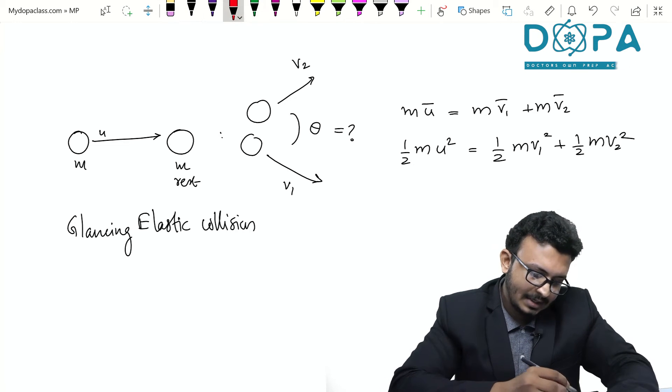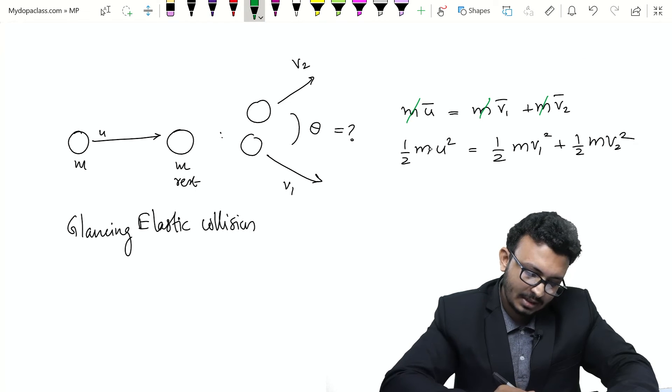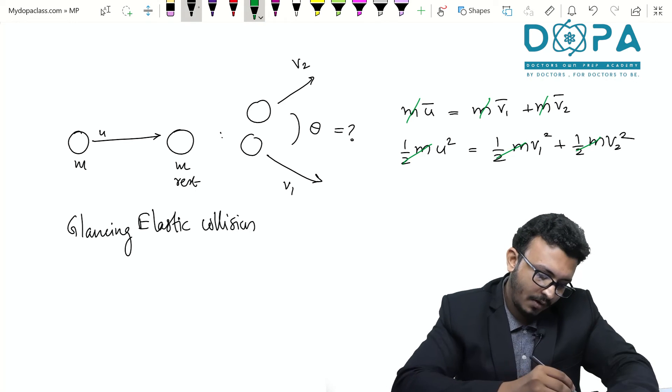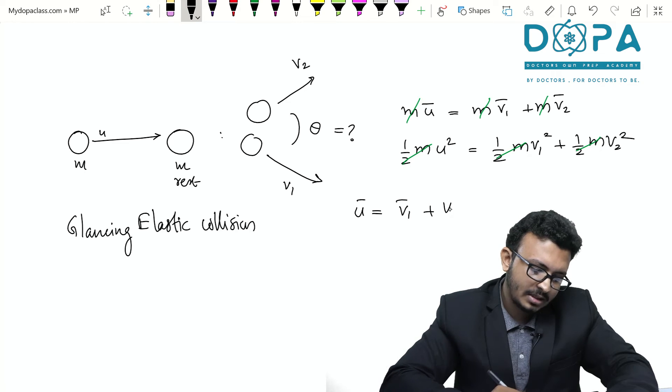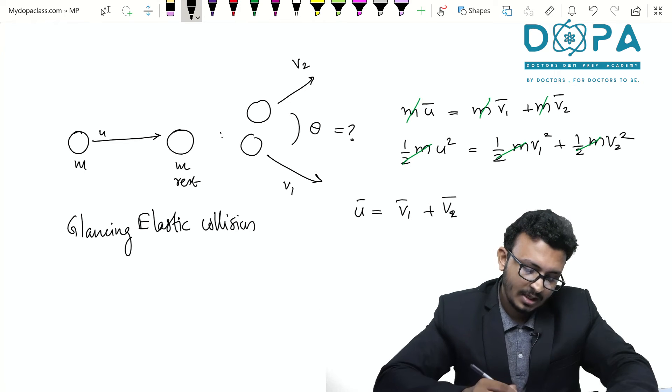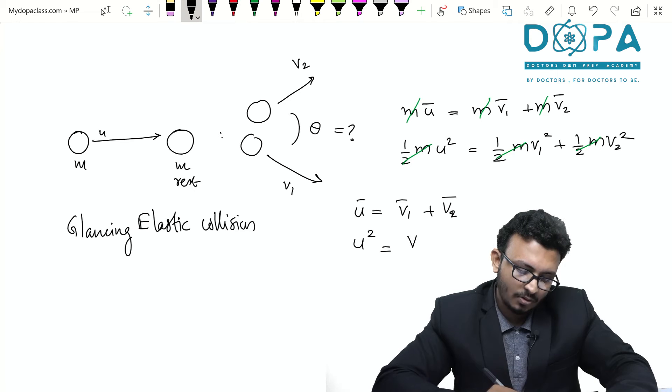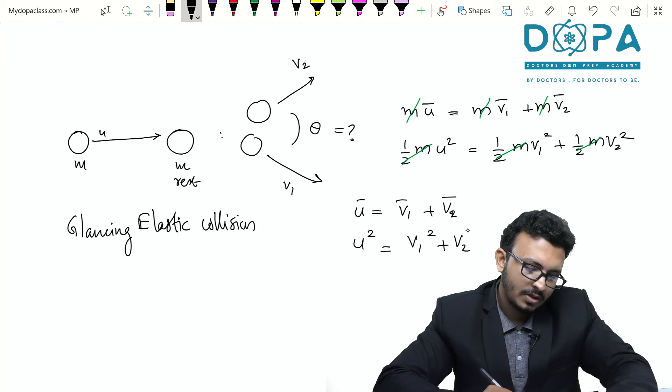Now cancelling all those identical M's and half M's, we have two equations. Vector U is the resultant of vector V1 plus vector V2. Similarly, the magnitude of U square is equal to V1 square plus V2 square.